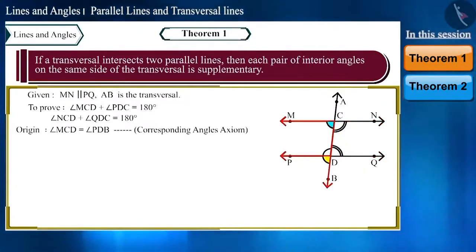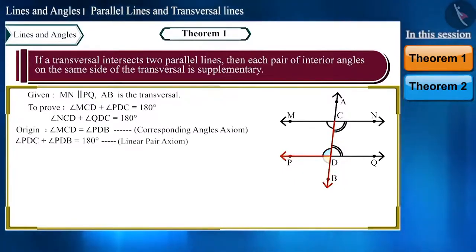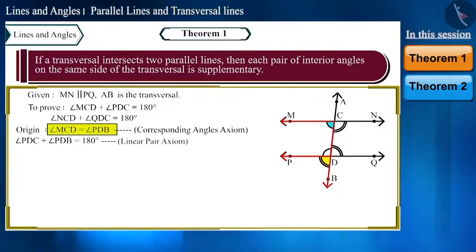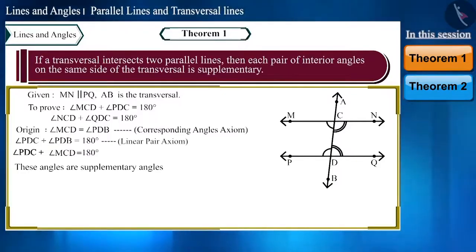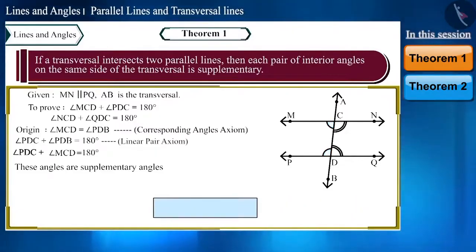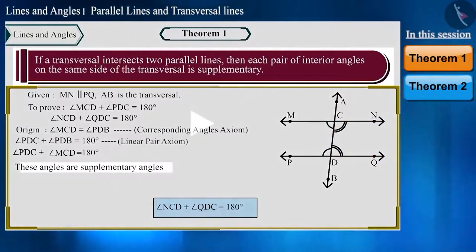Angle MCD and angle PDB are corresponding angles, so they will be equal. Angle PDC and angle PDB form a linear pair, so their sum will be 180 degrees. Since angle PDB is equal to angle MCD, we can replace angle PDB with angle MCD, and conclude that these two angles are supplementary. Similarly, we can prove angle NCD and angle QDC are supplementary angles.